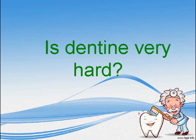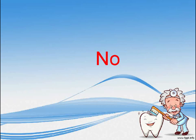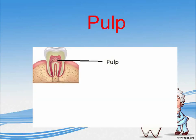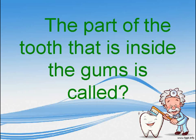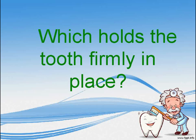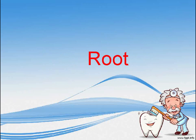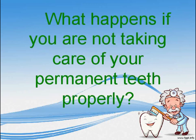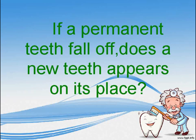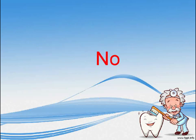Is dentine very hard? No. The soft portion in which blood vessels and nerves are present inside the dentine is called? Pulp. Which part of the tooth that is inside the gums is called? Root. Which holds the teeth firmly in place? Root. What happens if you are not taking care of your permanent teeth properly? Decay and fall off. If a permanent tooth falls off, does a new tooth appear in its place? No.